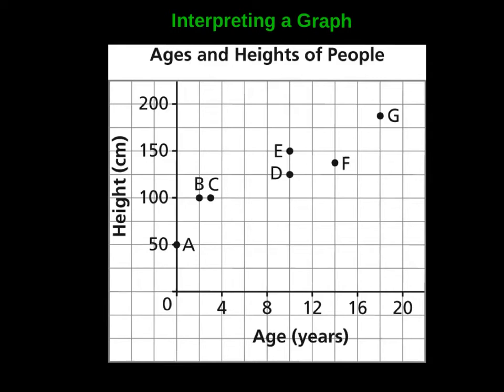Okay, so looking at this first example, we've got a graph of ages and heights of people. On the bottom here we have ages, and here we've got heights. Each of these points represent a person. Each point tells us information about their age and their height. You look down, you find their age. You look over, you find their height.